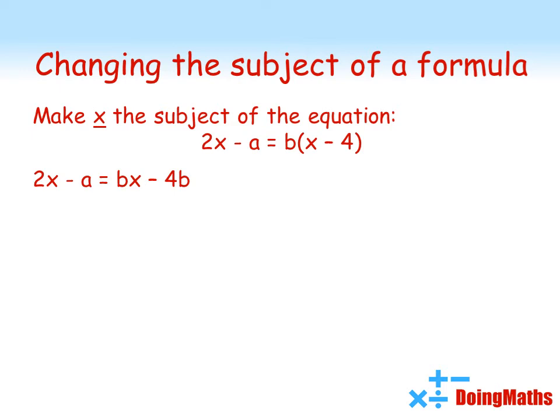In order to get an equation that just starts with X equals we want to get all the X's on the left hand side. Currently there's a BX on the right so let's take that away from both sides to move it over. We've now got 2X minus A minus BX equals minus 4B. Now if we're going to get X by itself we don't want that A on the left hand side. It's currently negative so if we add it on to both sides it will move it over. So we've now got 2X minus BX equals A minus 4B.